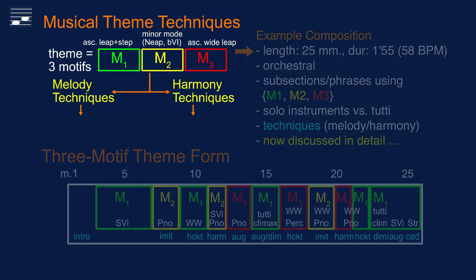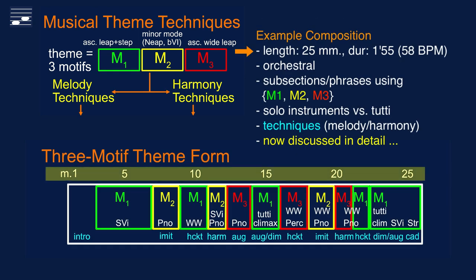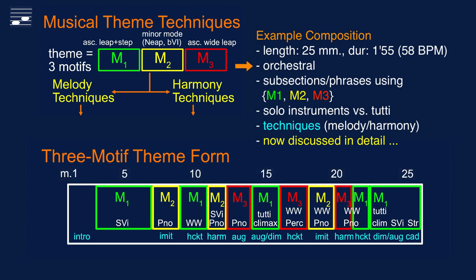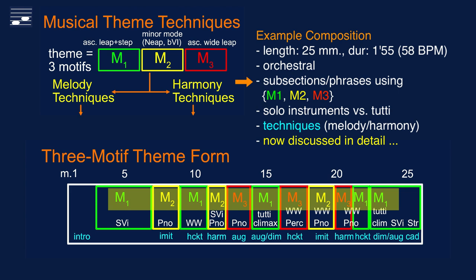The thematic elements return in the example composition, a slow piece of approximately two minutes duration. It is for studio orchestra and we may identify a number of phrases, built from the three motifs, M1 to M3.